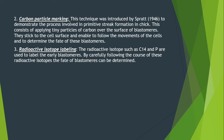The second artificial marking technique is carbon particle marking. This technique was introduced by Spratt to demonstrate the process involved in primitive streak formation in chick. It consists of applying tiny particles of carbon over the surface of blastomeres — they stick to the cell surface and enable us to follow the movements of cells and determine the fate of these blastomeres.